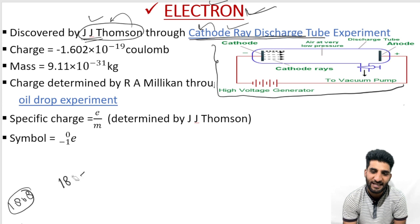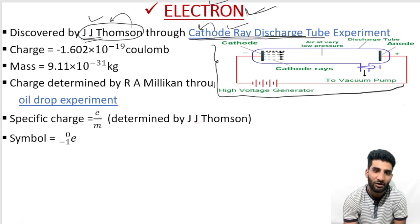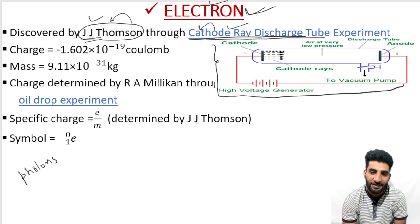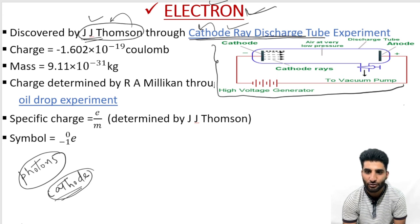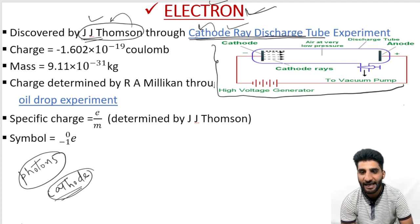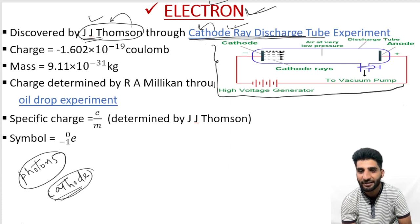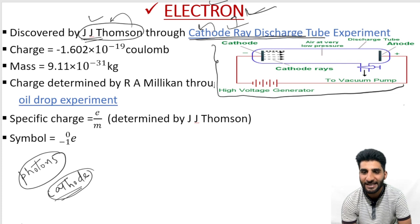Cathode rays are actually made up of negatively charged particles, and we call these particles as electrons. So cathode rays are simply made up of electrons. Through the cathode ray discharge tube experiment, J.J. Thomson discovered the electron.